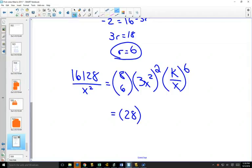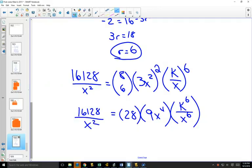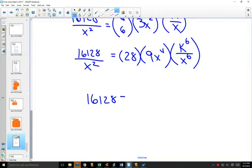8 choose 6 is 28, 9x to the 4. And here we'll have k to the power of 6, x to the power of 6. And that still is equal to 16,128 over x squared. Basically at this time, you have over x squared on both sides. Because you can see that your x to the 4 and x to the 6 is going to have an over x squared. You could multiply both sides by x squared, and you would get rid of all of your variables whatsoever. Now we're just looking at coefficients.